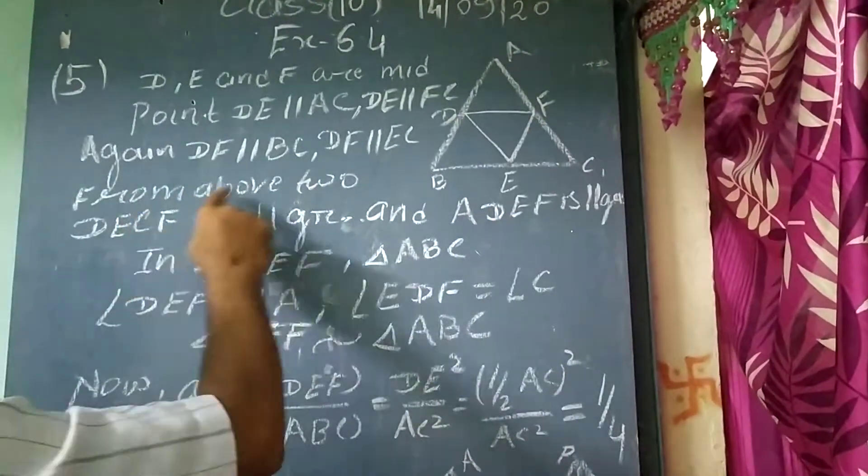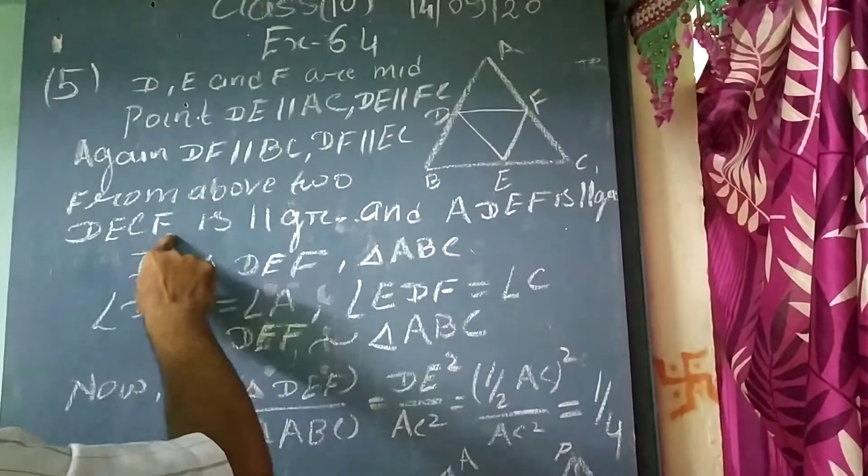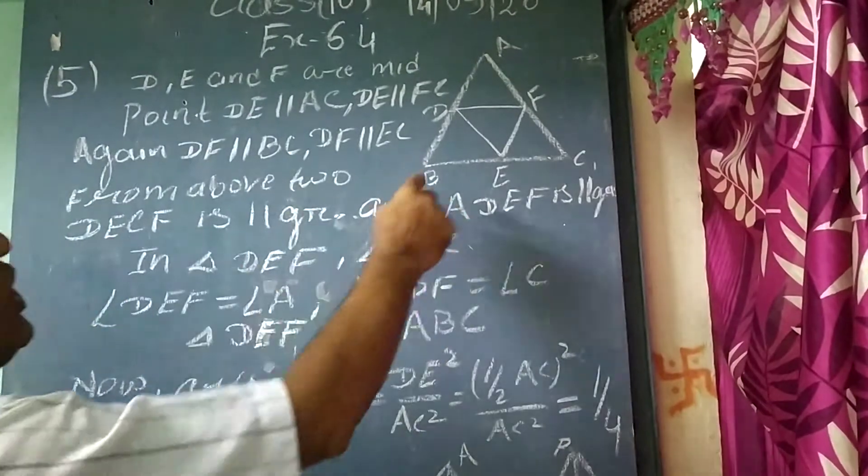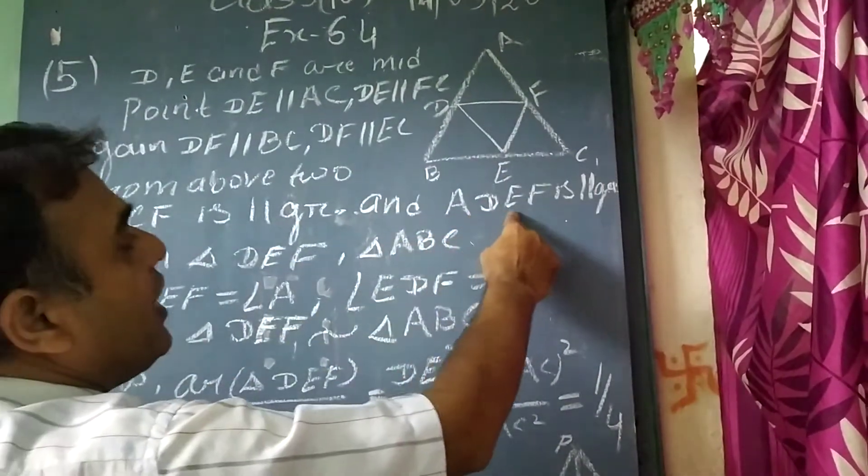So what we get from above two, we have that DEFC is a parallelogram. So DEFC is a parallelogram and ADEF.